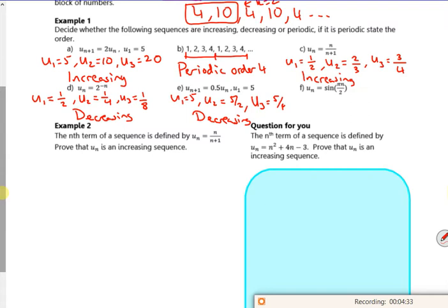This is one which came off an exam paper which people got wrong. So if n is 1, u1 is sine of pi over 2, which is 1. U2 is sine of pi, which is 0.